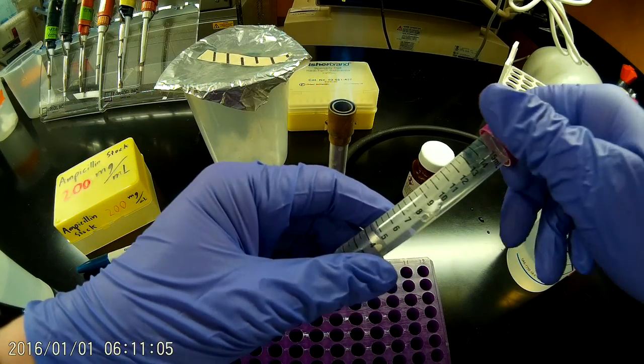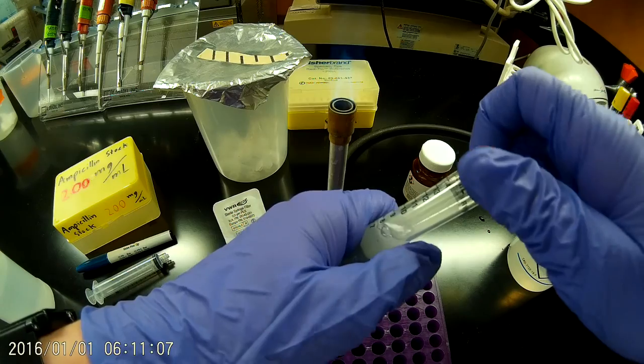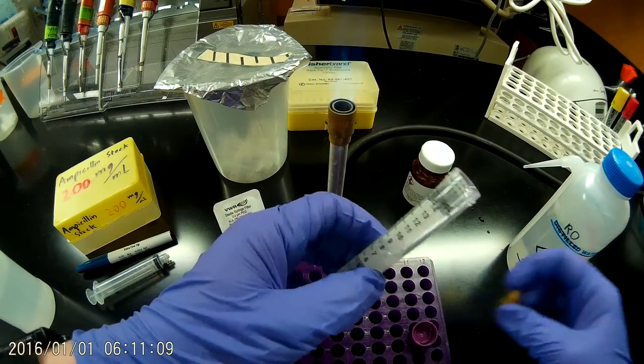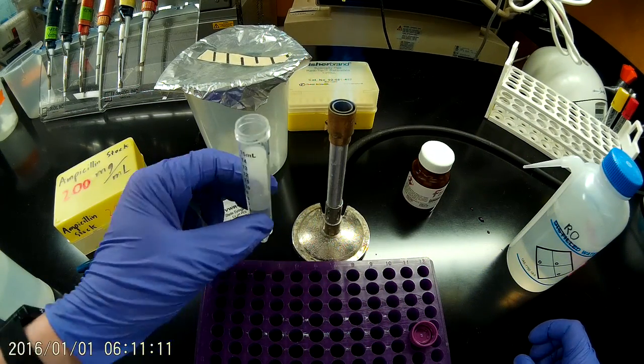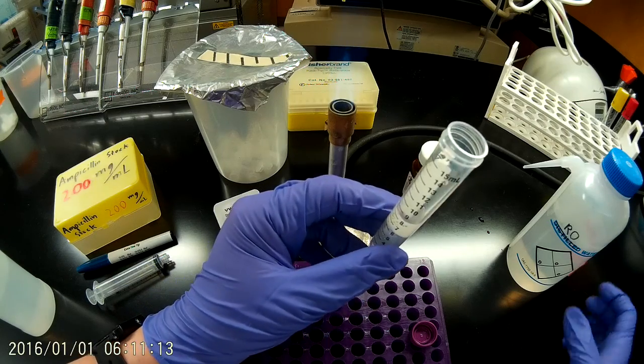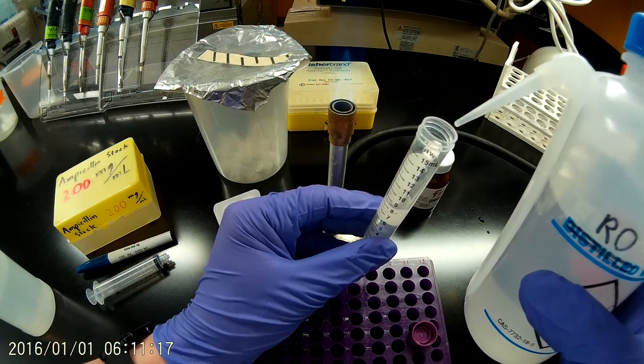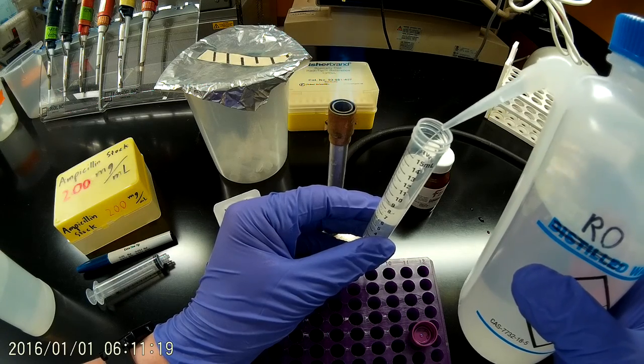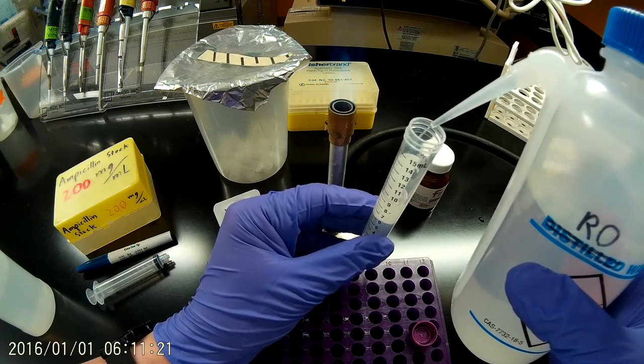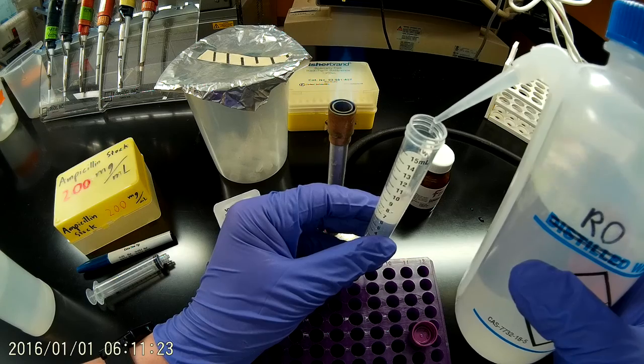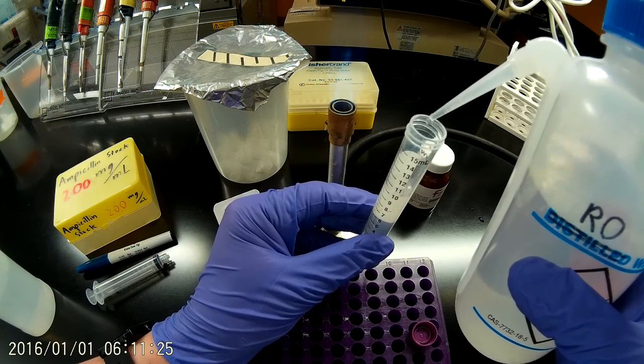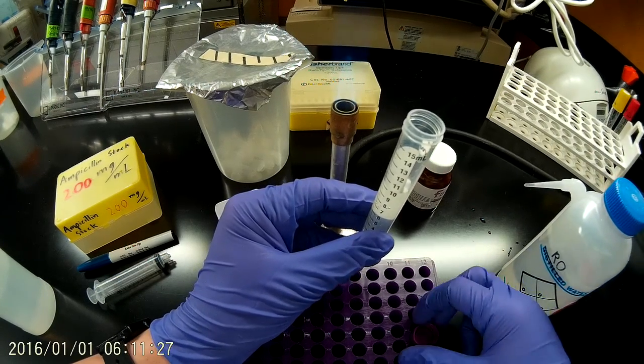We're going to want to dilute that to a final volume of 10 mils. We've actually determined by comparing our volumes in these to masses using an analytical balance that these 15 mil conicals are fairly accurate. So I think you can get away with this. And to the bottom of the meniscus, 10 mils.